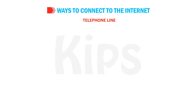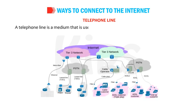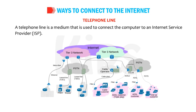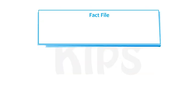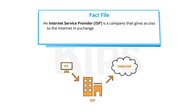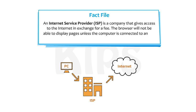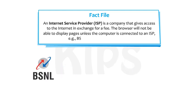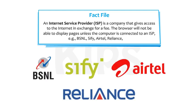A telephone line is a medium used to connect the computer to an Internet Service Provider (ISP). An Internet Service Provider (ISP) is a company that gives access to the Internet in exchange for a fee. The browser will not be able to display pages unless the computer is connected to an ISP. Examples include BSNL, SIFI, Airtel, Reliance, etc.